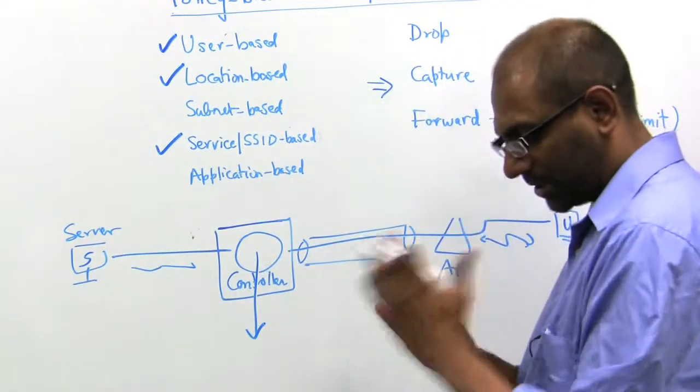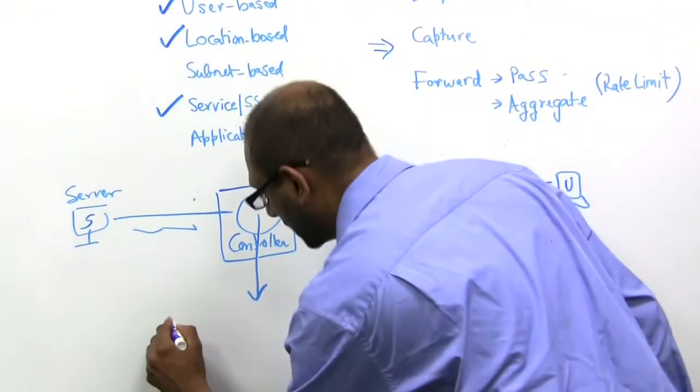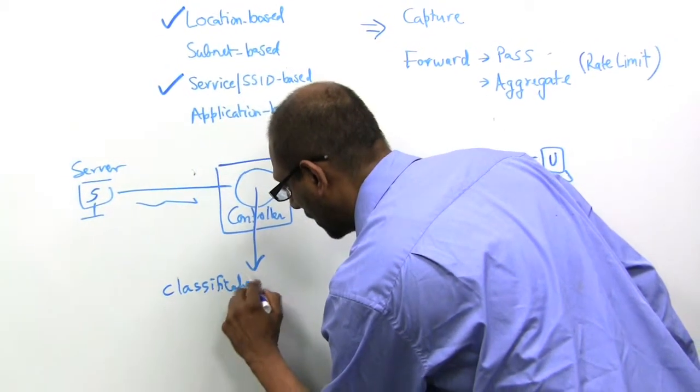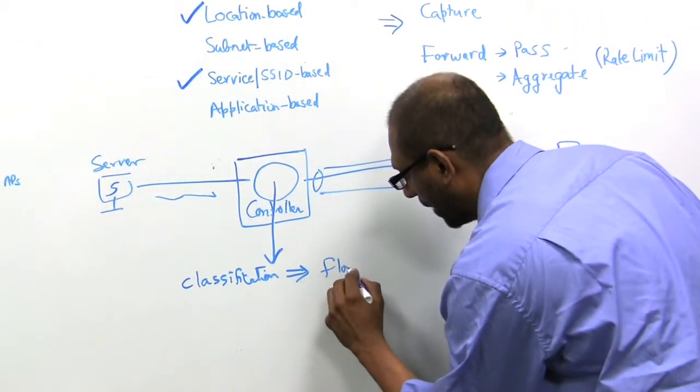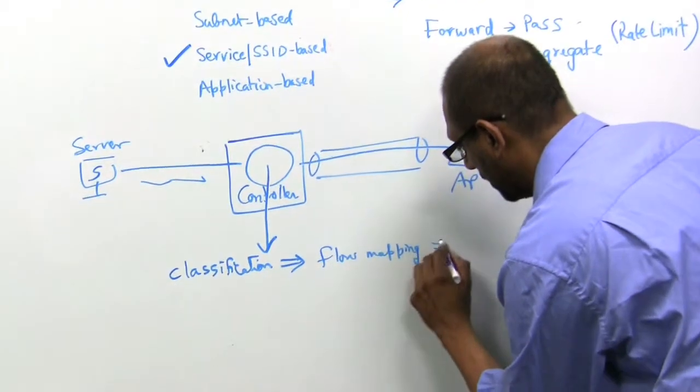There are three parts to how we do the treatment of packets here. The first one is classification. So once we classify the packet, we do what we call a flow mapping. And then we do action.